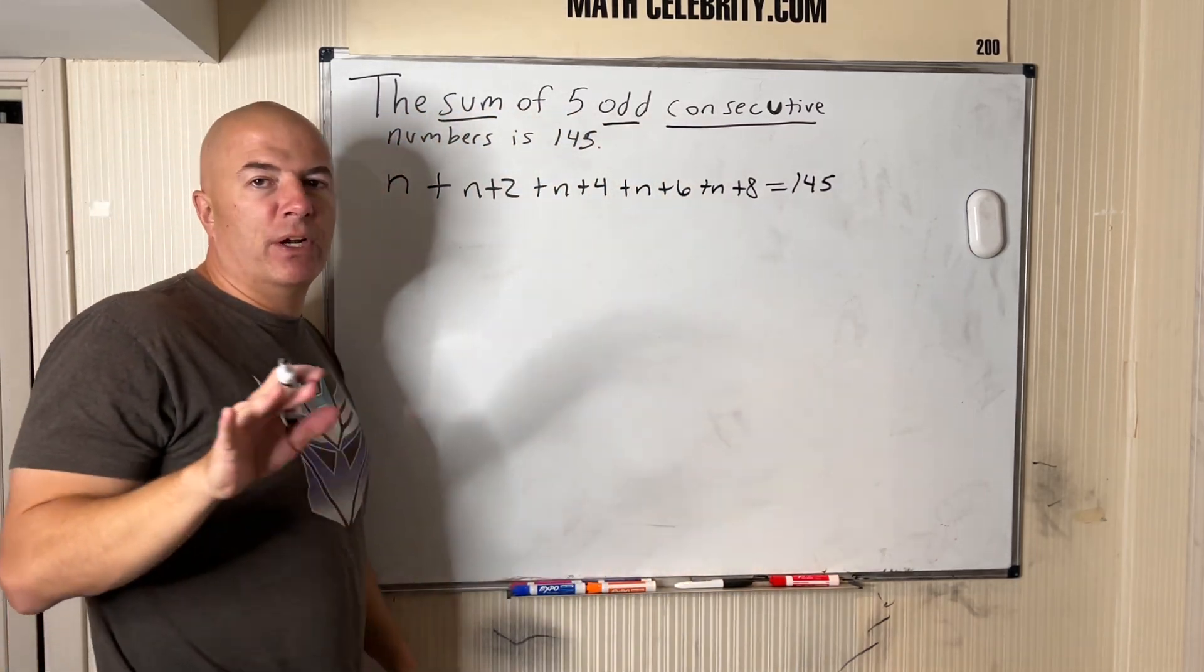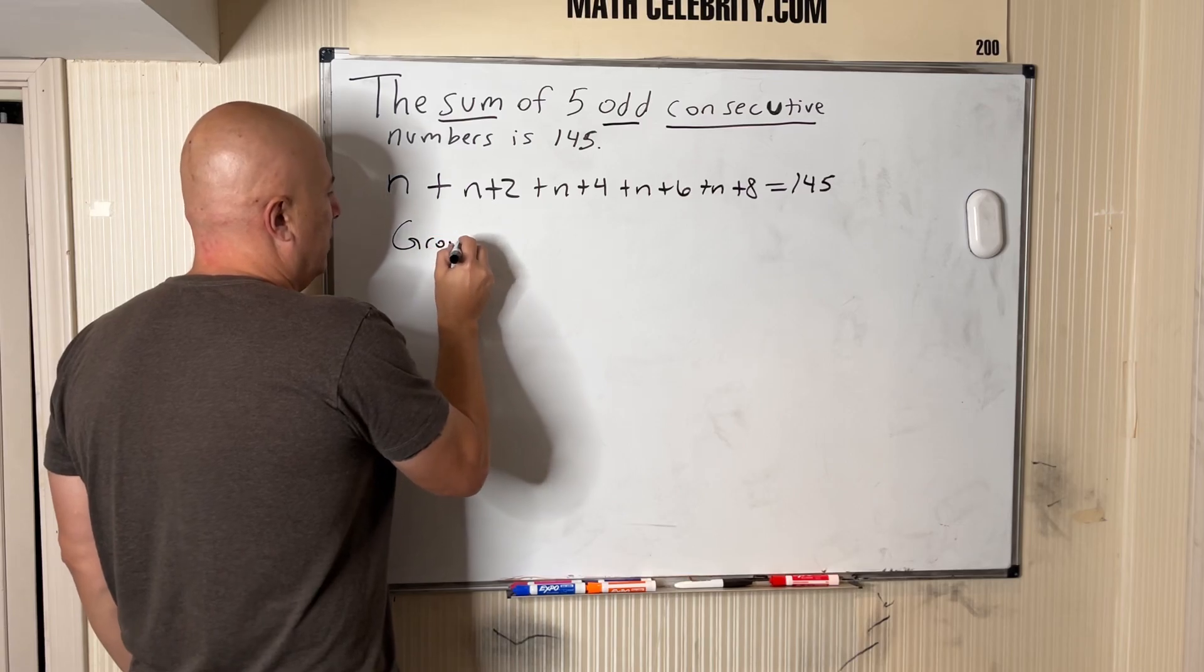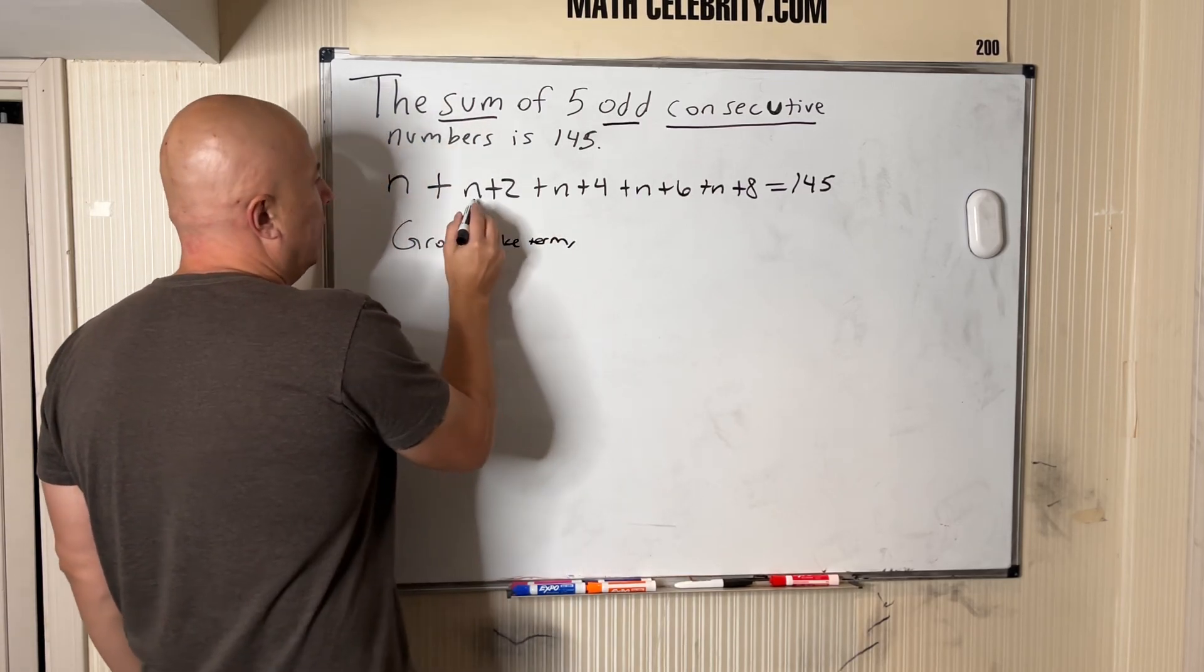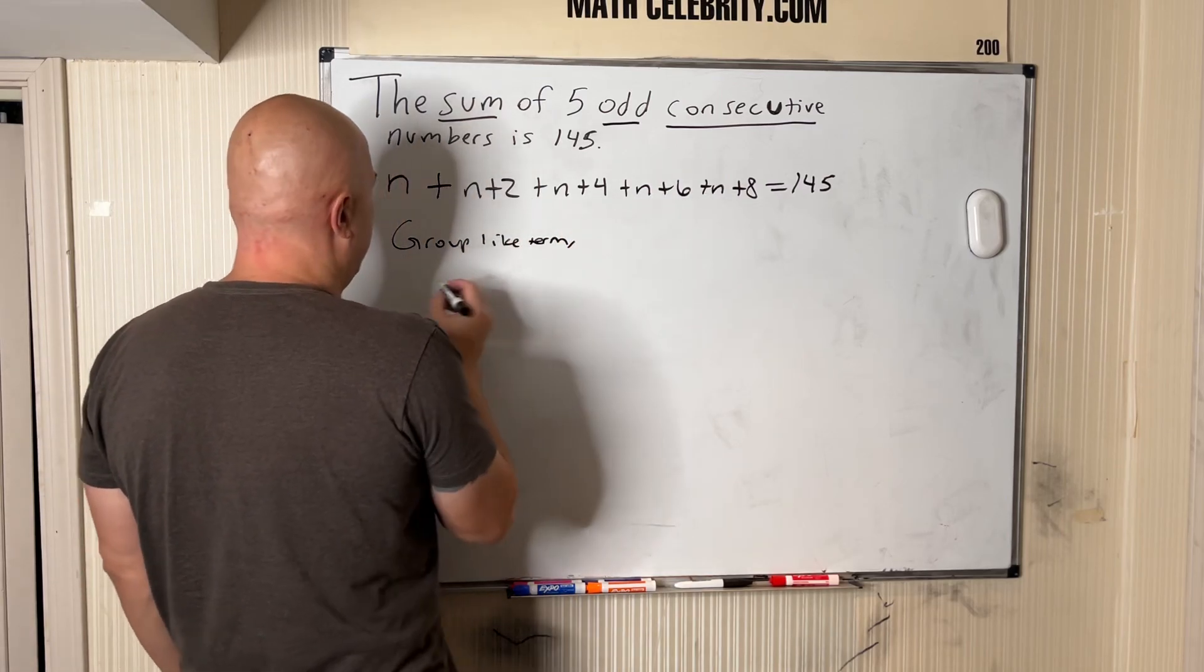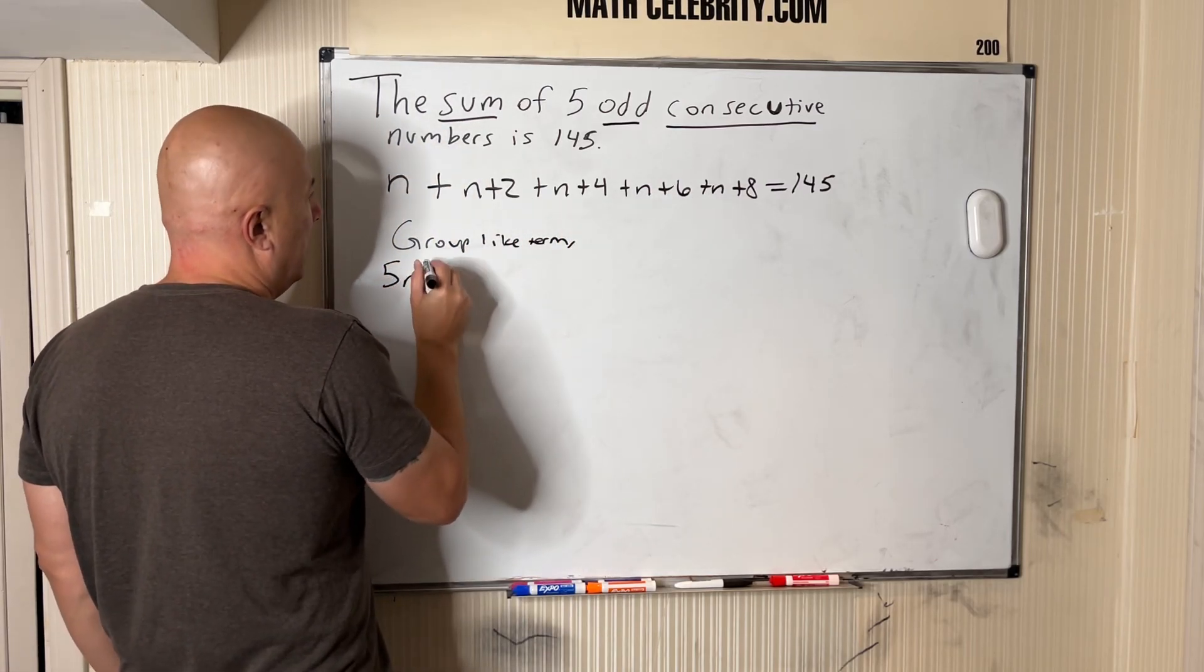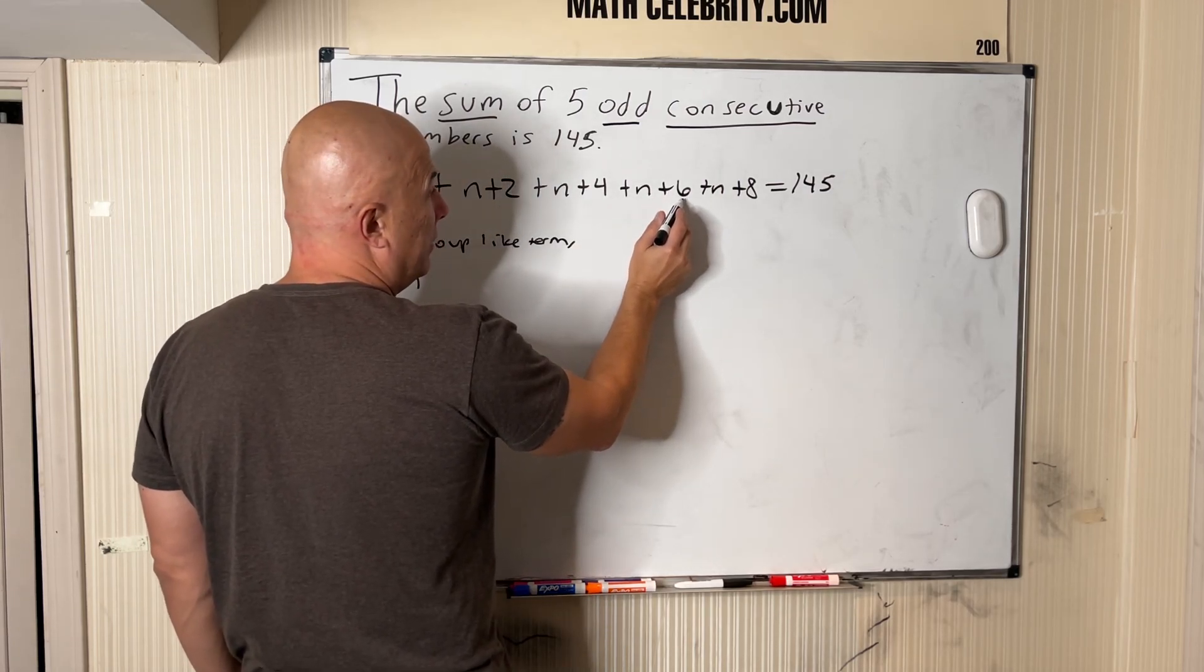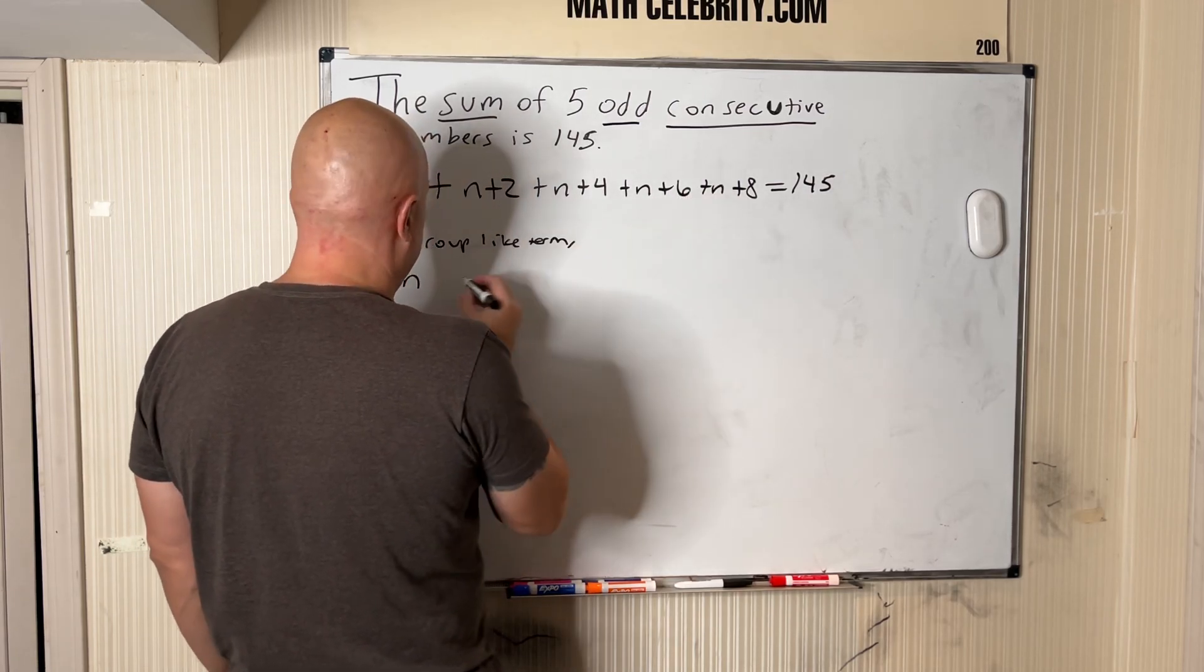Now we want to group like terms. I got one, two, three, four, five n, right? Two plus four is six, six plus six is twelve, twelve plus eight is twenty.